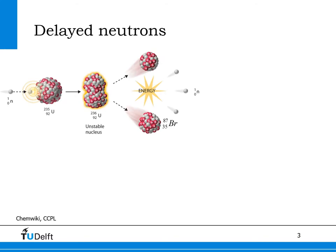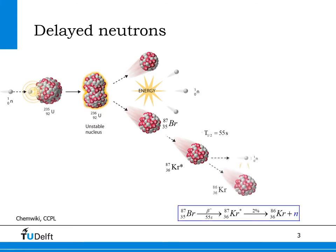However, a very small number of the fission products will also emit a neutron after decay. This is shown in the diagram in which the fission product bromium-87 decays with a half-life of 55 seconds to krypton-87 in an excited state, which in 2% of the cases decays to krypton-86 with the emission of a neutron. This means that a very small number of neutrons released in the fission process are actually released a few seconds after the fission event itself. These neutrons are called delayed neutrons. For uranium-235, the average delay time is about 13 seconds.